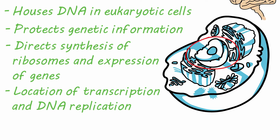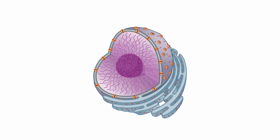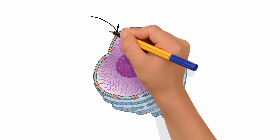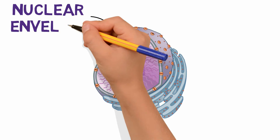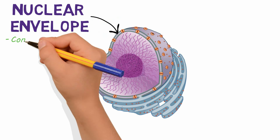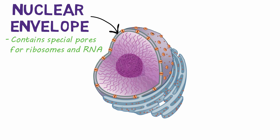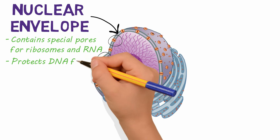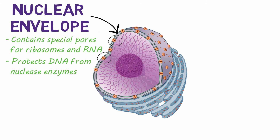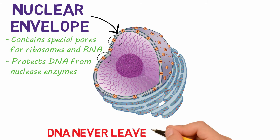The nucleus has a very distinct structure. It's surrounded by a double membrane called the nuclear envelope, which contains special nuclear pores through which ribosomes and RNA exit. This nuclear envelope protects the DNA from nuclease enzymes in the cell whose job it is to destroy nucleotides. And you don't want your DNA destroyed. The DNA never leaves the nucleus for the same reason.